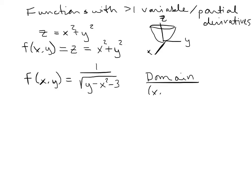Now the domain isn't just x values — it's going to be x's and y's. We could even have a function with more than just x and y as variables; we could have ten variables, and then the domain would depend on all ten. In this specific case, we're looking at which x's and y's we can plug in to make the function valid. We can't have division by zero and we can't have a negative under a square root, so y minus x squared minus 3 must be greater than zero.